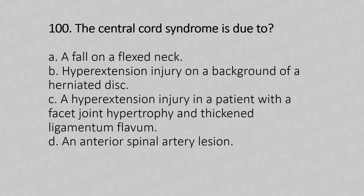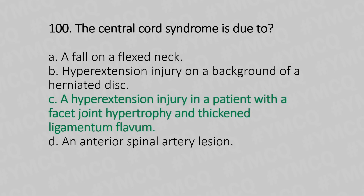Let's move to question number 100. The central cord syndrome is due to: Option A, a fall on the flexed neck. Option B, hyperextension injury in the background of a herniated disc. Option C, a hyperextension injury in a patient with facet joint hypertrophy and thickened ligamentum flavum. Option D, an anterior spinal artery lesion. The answer is Option C, a hyperextension injury in a patient with facet joint hypertrophy and thickened ligamentum flavum.